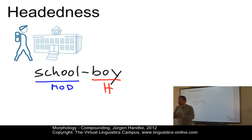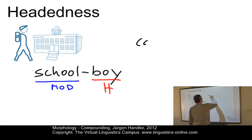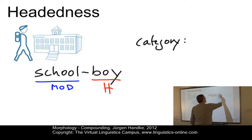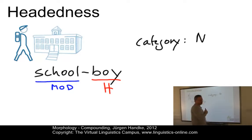While the non-head is peripheral to the overall construction, the head determines a number of its properties. For example, it determines the category or word class. So 'schoolboy' is clearly a noun because 'boy' is a noun.